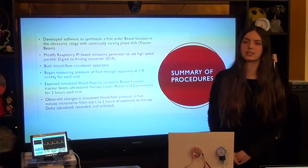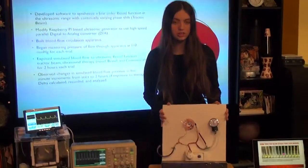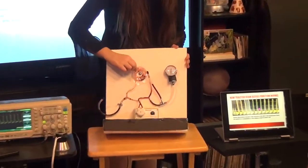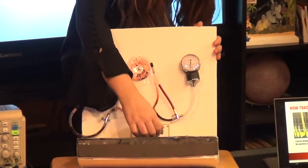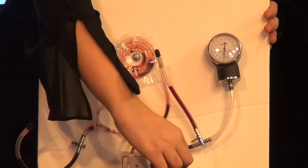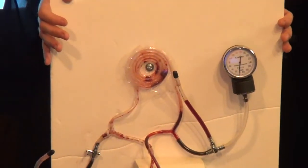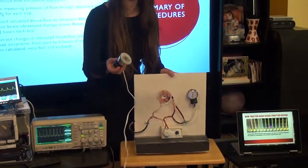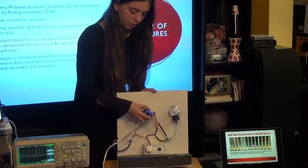The data was collected using this blood flow circulation apparatus. This is composed of tubing that is concentrated here, a peristaltic pump to help simulate blood flow and a pressure gauge. The blood stimulant was inserted into the system and here where the tubing is concentrated the ultrasonic therapy method was applied for 120 minutes.